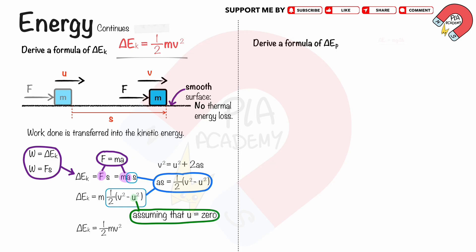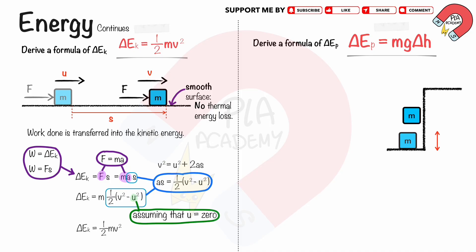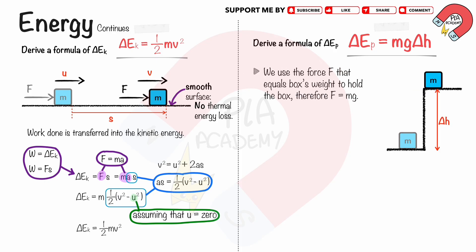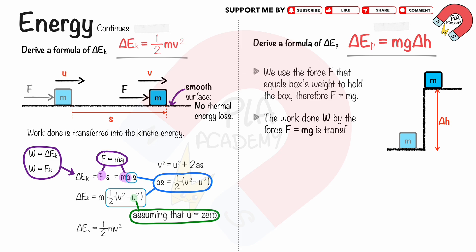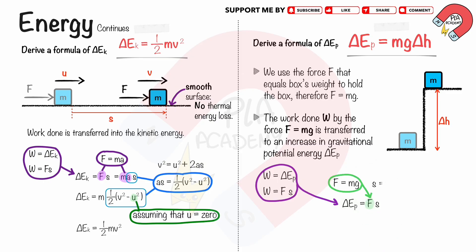Deriving the formula of gravitational potential energy as Ep equals mg delta h. A box with mass m kilograms is lifted from the ground to a higher level with height delta h. Since we use the force F equal to the box's weight to hold the box, F equals mg. Therefore, all the work done W by the force F equals mg is transferred to an increase in gravitational potential energy delta Ep. The work done W equals Fs, so delta Ep equals Fs. The force F equals mg, and the distance s equals delta h. Therefore, delta Ep equals mg delta h.